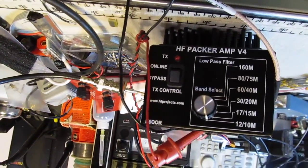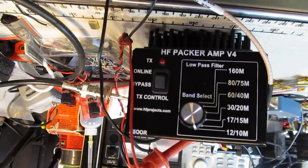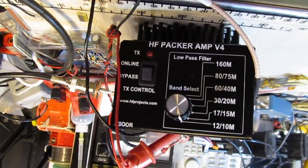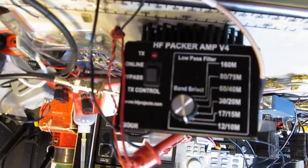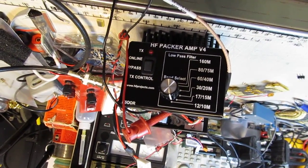On the bench today is this little HF Packer amplifier. It belongs to my friend Drew W2OU. It's a little 35 watt amplifier for use with low power amateur radio gear on frequency bands from 160 meters up to 10 meters.